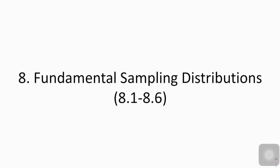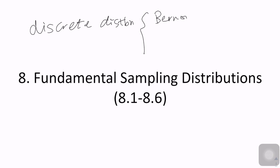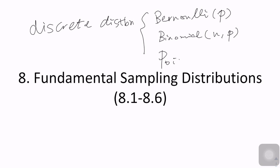In the past chapters, we have learned a bunch of continuous and discrete distributions. For discrete distributions, we learned Bernoulli distribution with parameter p, binomial distribution with parameters n and p, and Poisson distribution with parameter lambda. Those are the discrete distributions we covered in Chapter 5.